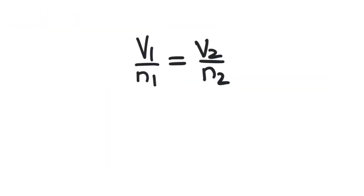Using an equation, it can be described like this: V1 over N1 equals V2 over N2. Basically, this is showing the relationship between two sets of conditions.